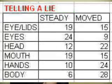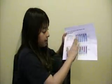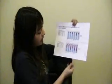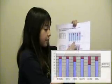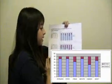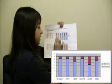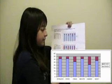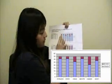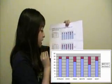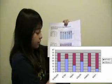I have it recorded for truth and for lie. I transferred this data into my graph. Right here I have the eyelids, the eyes, the head, the mouth, the hands, and the body. The blue lines are steady and the red lines are when they move. As you can see on my graph, when they're telling a lie they tend to move more, and when they're telling the truth they tend to stay steady more.